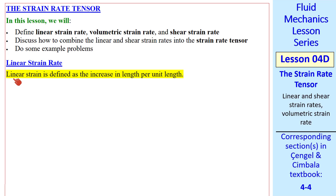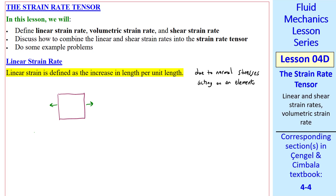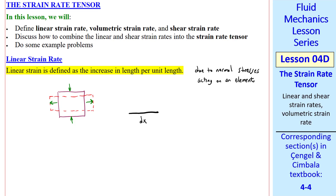Linear strain rate. We know from our study of solid mechanics that linear strain is the increase in length per unit length. Linear strain comes about due to normal stresses acting on an element — in our case, a fluid element or fluid particle. If this is our initial fluid particle and there are normal stresses acting to stretch in the horizontal direction and compress in the vertical direction, the fluid particle will distort, as sketched. Mathematically, consider a segment of fluid of length dx.